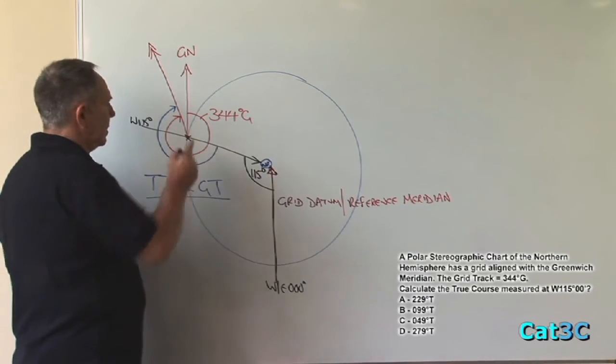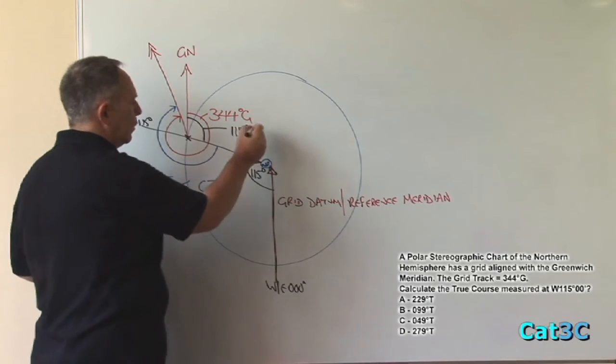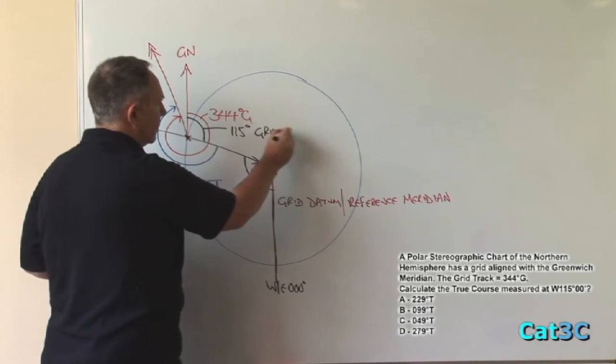And that is this angle here, which is 115 degrees, which we refer to as grid convergence.